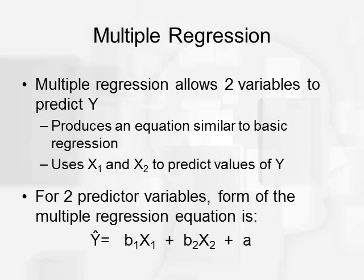So we can create an equation based on multiple outcomes. And that equation would look something like this one down here. We have Ŷ = b₁X₁ + b₂X₂ + a. Once again b is going to be our slope and a is going to be our intercept.